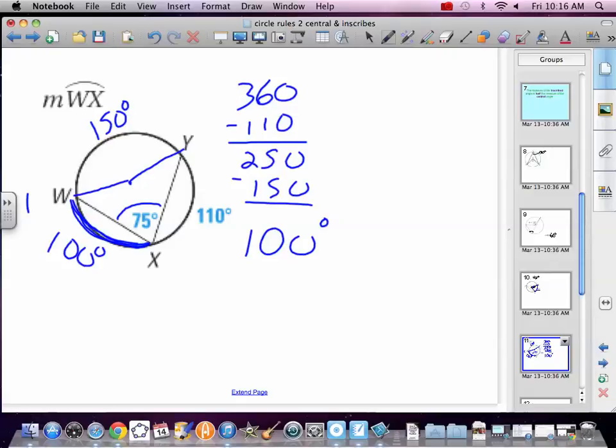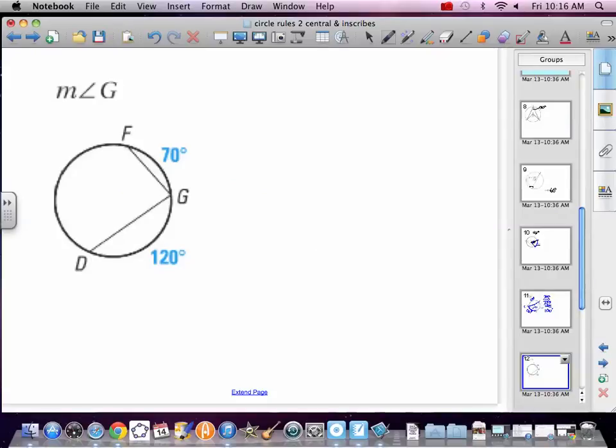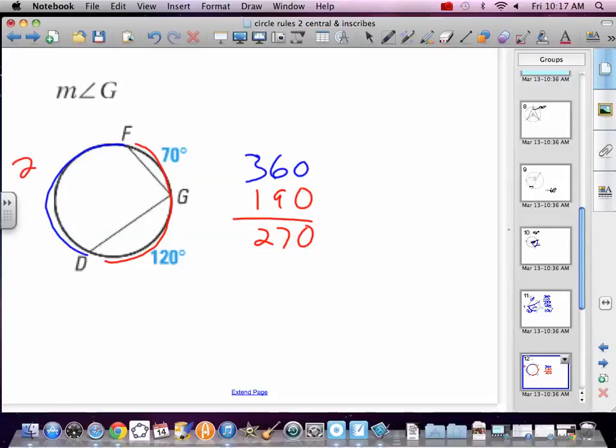So you're bouncing between arcs and centrals and inscribes. Measure of angle G. So if we can find this arc, we can find G. So I've got 360 in a circle, and I know 70 of it, and I know 120 of it. So that means I know 190 of it. So that means there is 270 left.